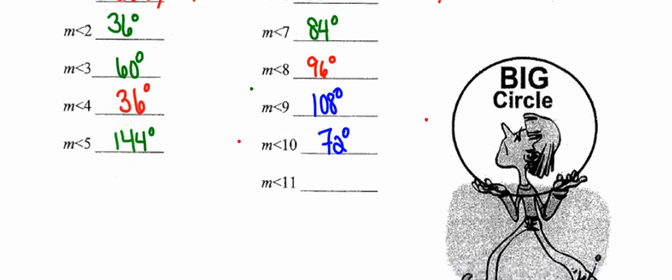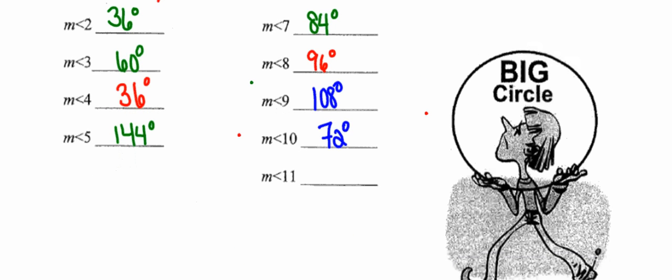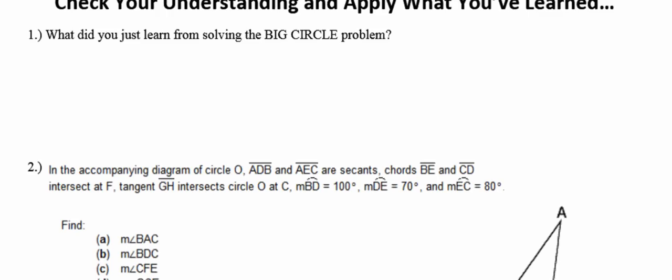So there's the big circle. I think about it like a puzzle — it's fun, it's interesting, and it has a lot of little pieces to put together. You only need to find one valid method for each angle. At the top of the next page, summarize in your own words what you learned by solving this big circle problem, then apply what you've learned to solve the problems on that page.